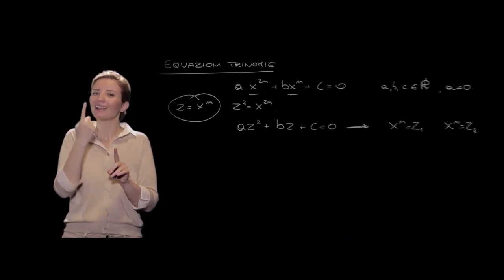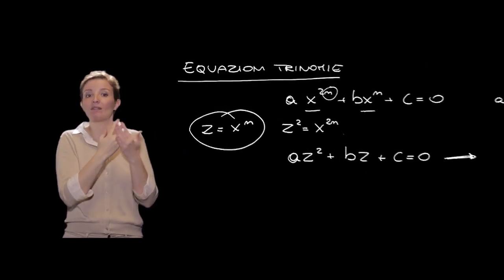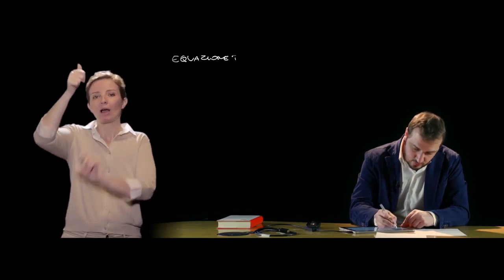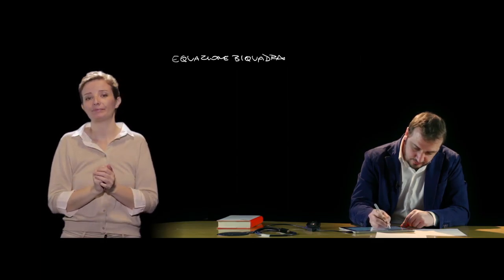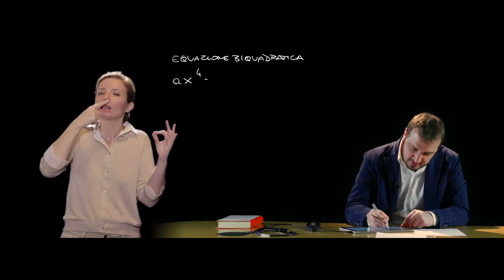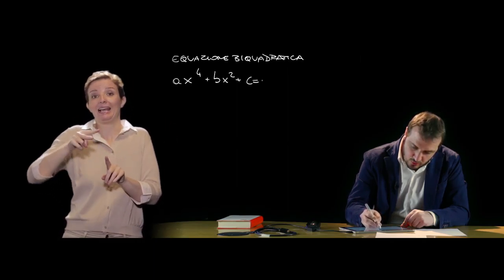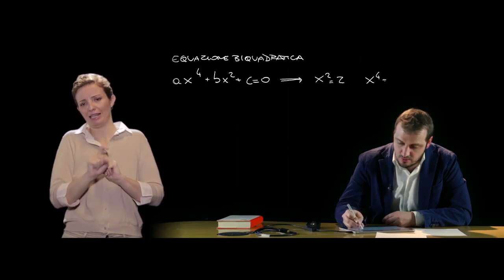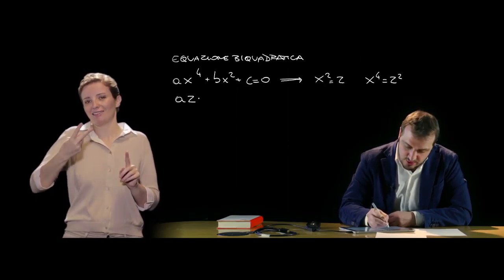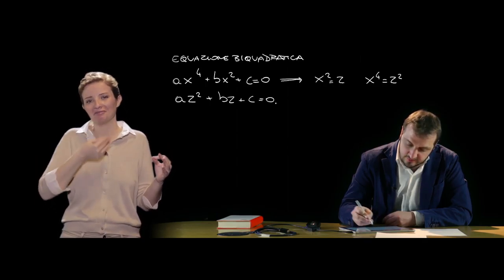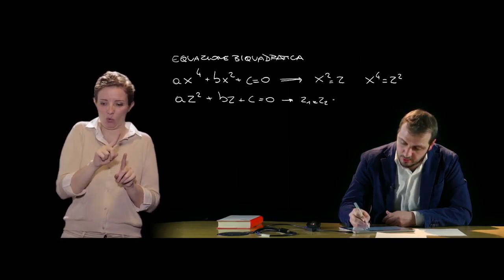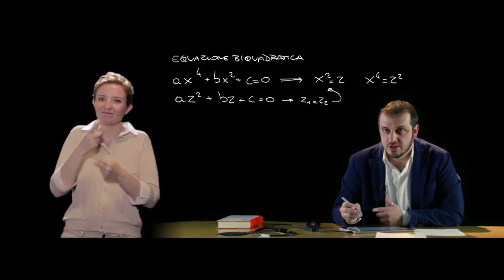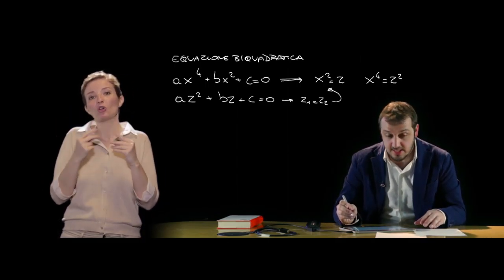Tra tutte le trinomie, ce n'è una particolare con n = 2: le equazioni biquadratiche, della forma ax⁴ + bx² + c = 0. La tecnica di soluzione è la stessa: si sostituisce z al posto di x² e z² al posto di x⁴, trasformando l'equazione in una di secondo grado. Si trovano le soluzioni z₁ e z₂, che vengono poi risostituite per ricavare le eventuali soluzioni in x.